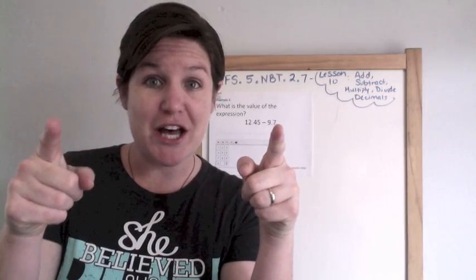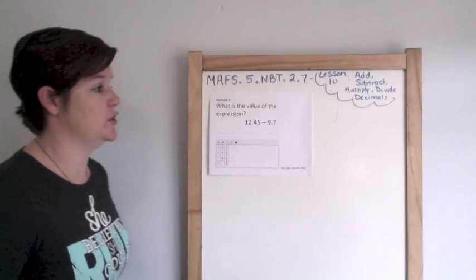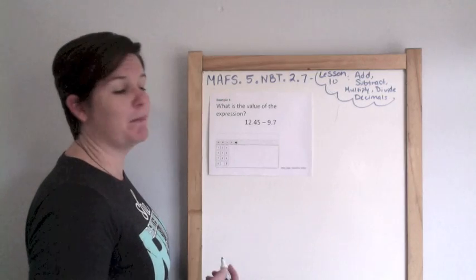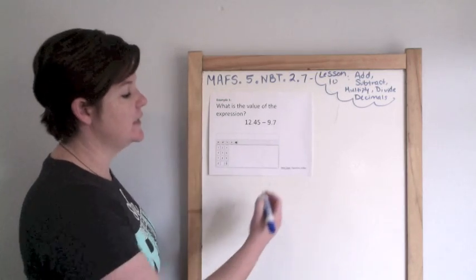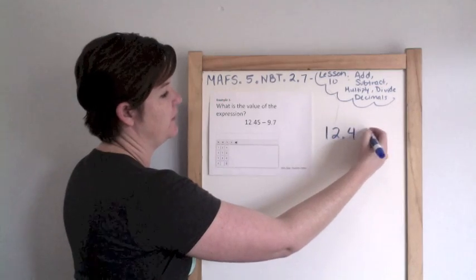Okay, so example 1 says, what is the value of the expression? 12 and 45 hundredths minus 9 and 7 tenths.